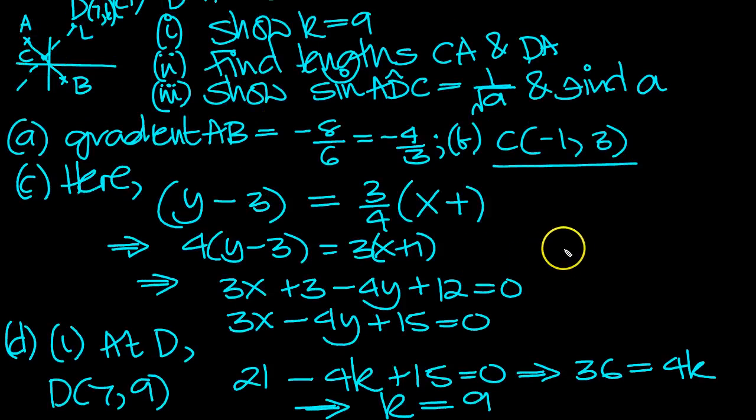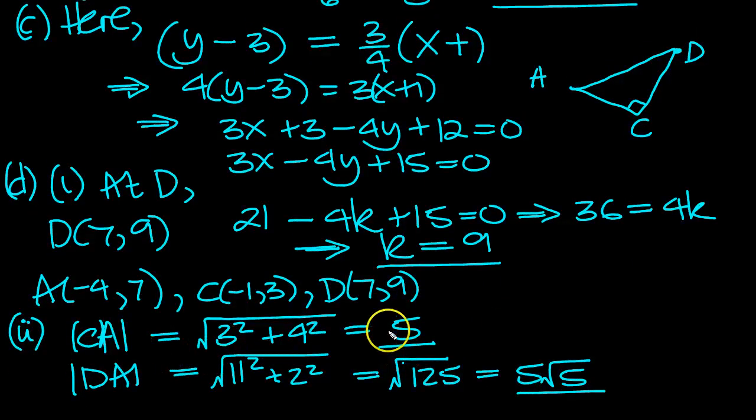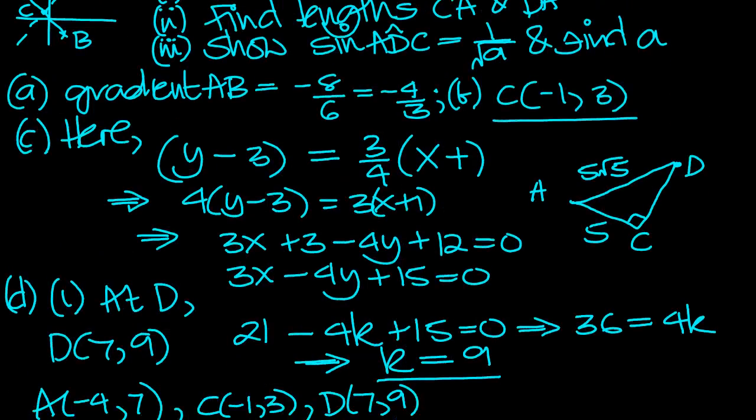So here's A, here's C, and there's D. Here's A, here's C, and that's a right angle, isn't it? And we now know, there's our picture of the triangle above. We know that CA is 5. We know that DA is 5√5. So we should be able to work out the sine of ADC. I think that's what we wanted, sine ADC.